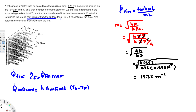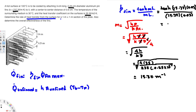Now we calculate fin efficiency: η_fin = tanh(mL) / (mL). The length L = 3 cm = 0.03 m. So mL = 15.37 × 0.03 = 0.461. Computing tanh(0.461) / 0.461 gives η_fin = 0.935.